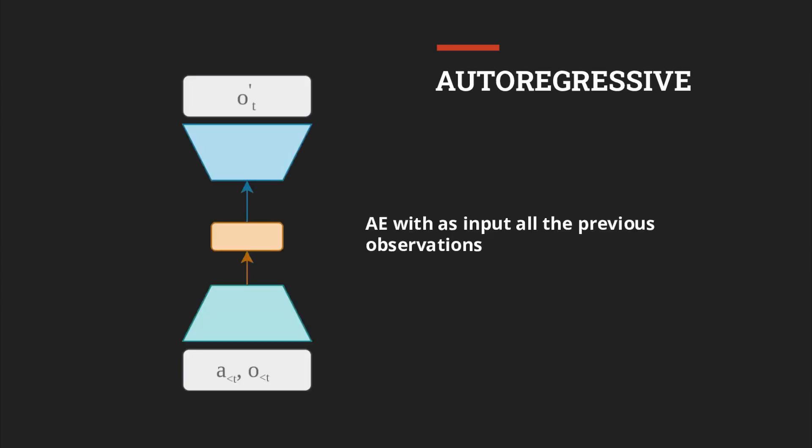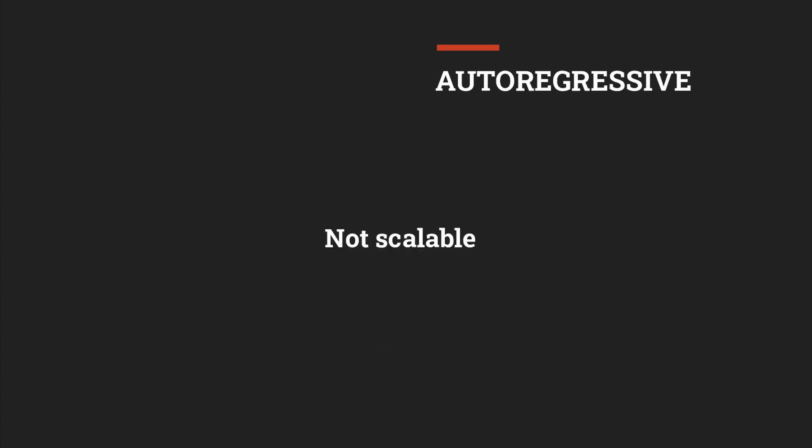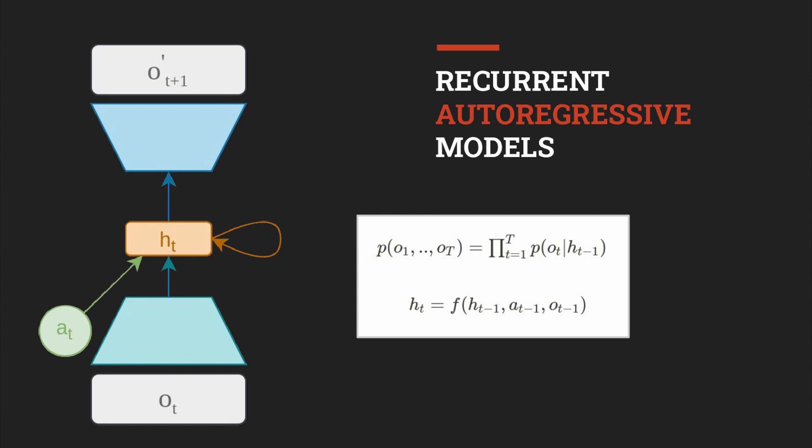You could use an autoencoder model where as inputs you feed all the observations and current action and obtain the next observation. Then for predicting the next one you feed the autoencoder with the same input plus the predicted observation from the previous step — and so on. This is the autoregressive property. But it is extremely inefficient and not scalable, as at every time step you need to inject the encoder with the whole previous sequence. A solution is to use a recurrent mechanism for computational sharing, like a recurrent neural network, which is much better and faster.